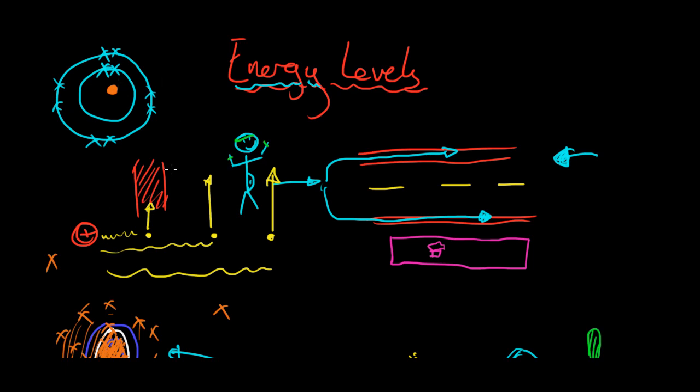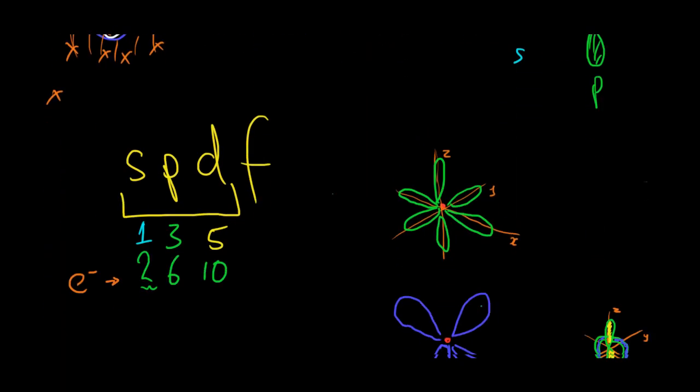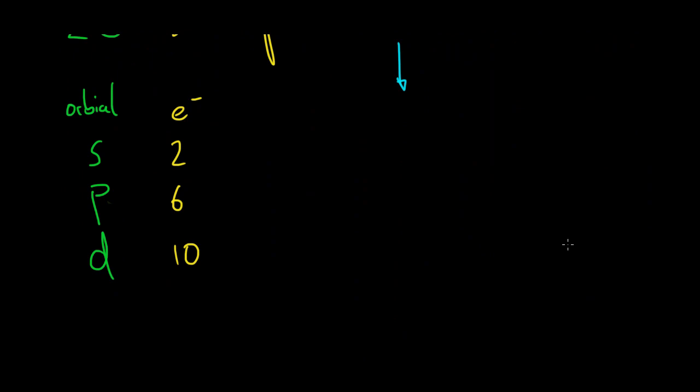Could that be an S orbital maybe. As I said it is a representation of these energy levels. And in the next video we'll cover about how electrons fill these energy levels. And how we can write down an element in terms of its electrons and spins and stuff.